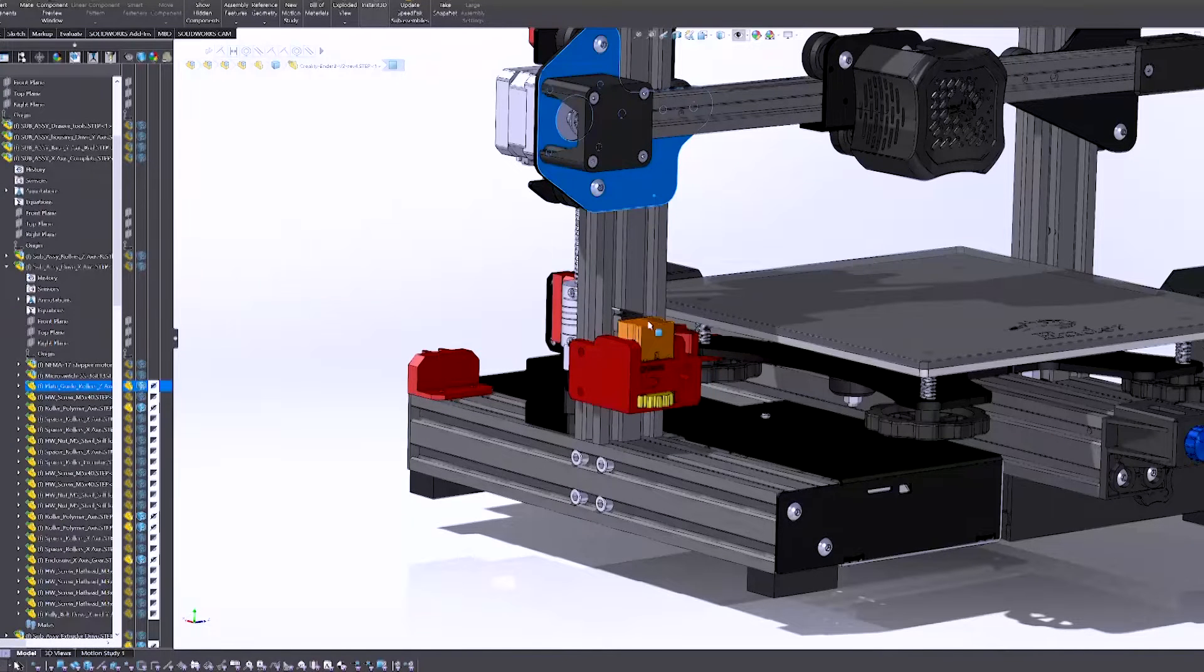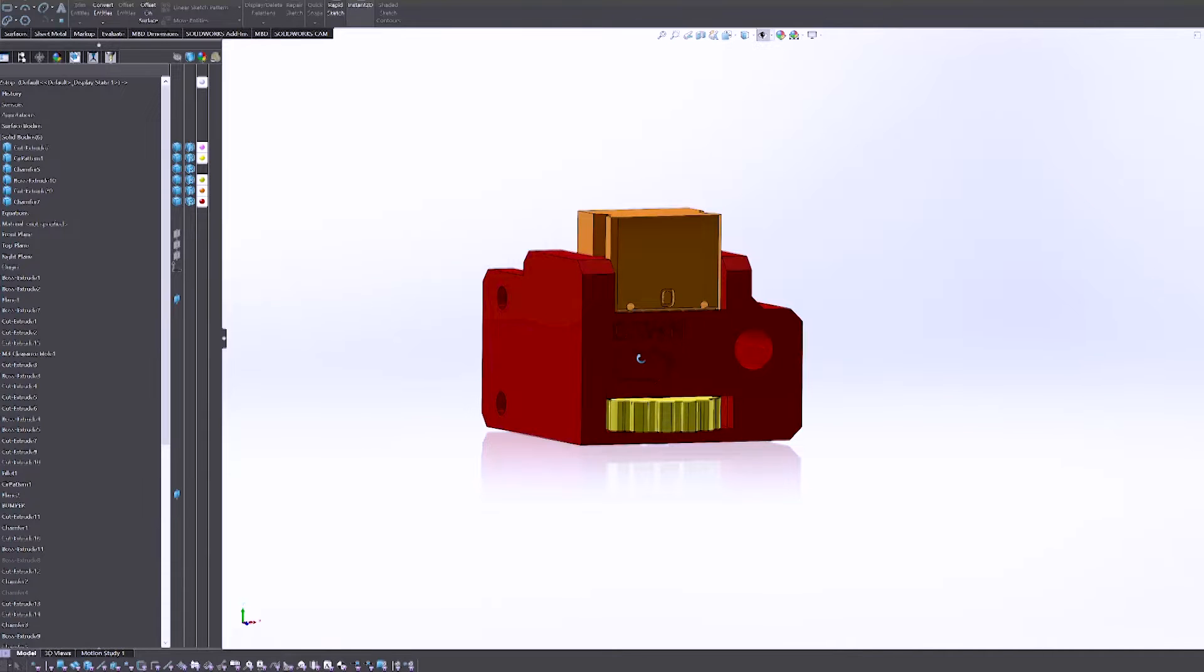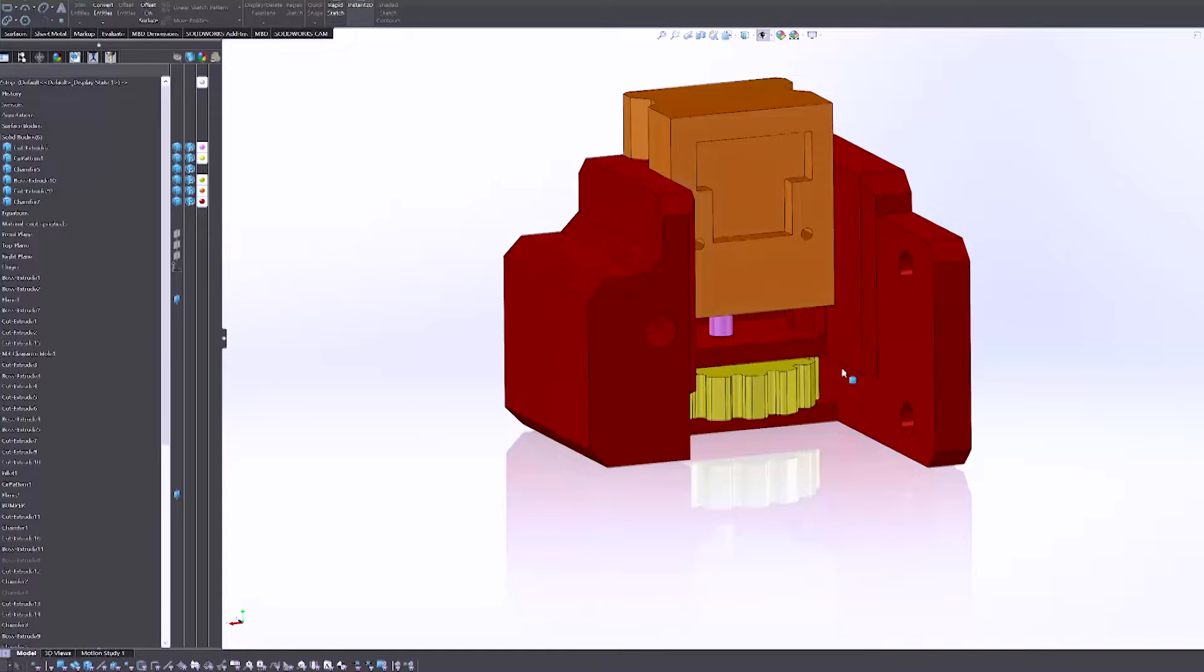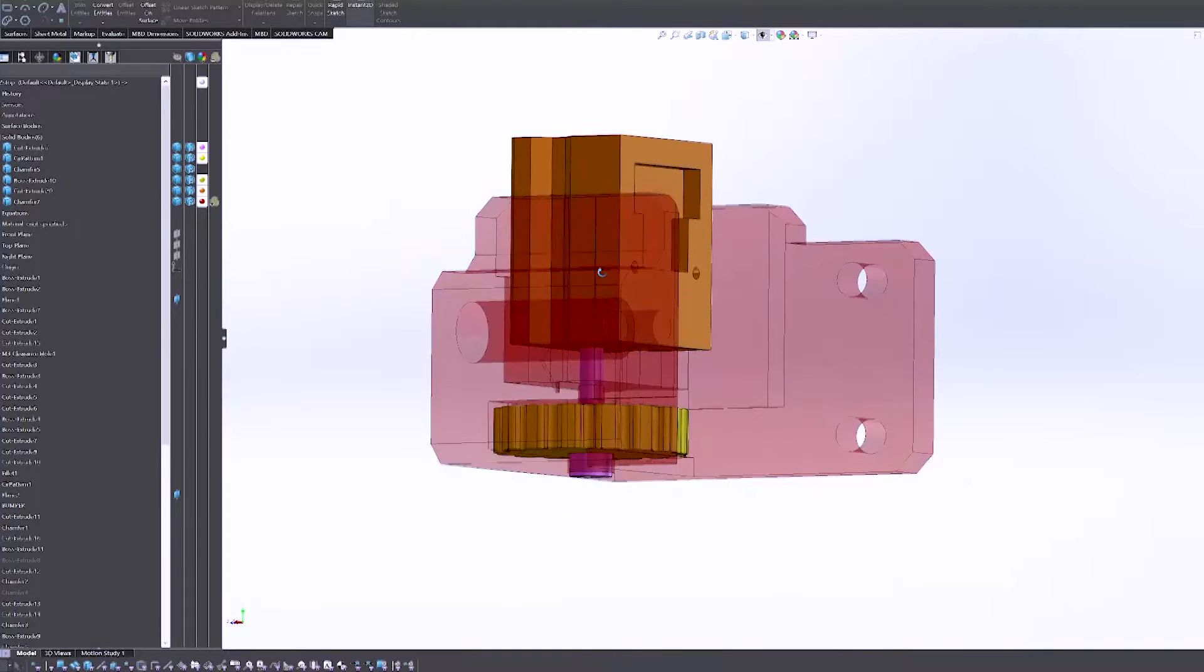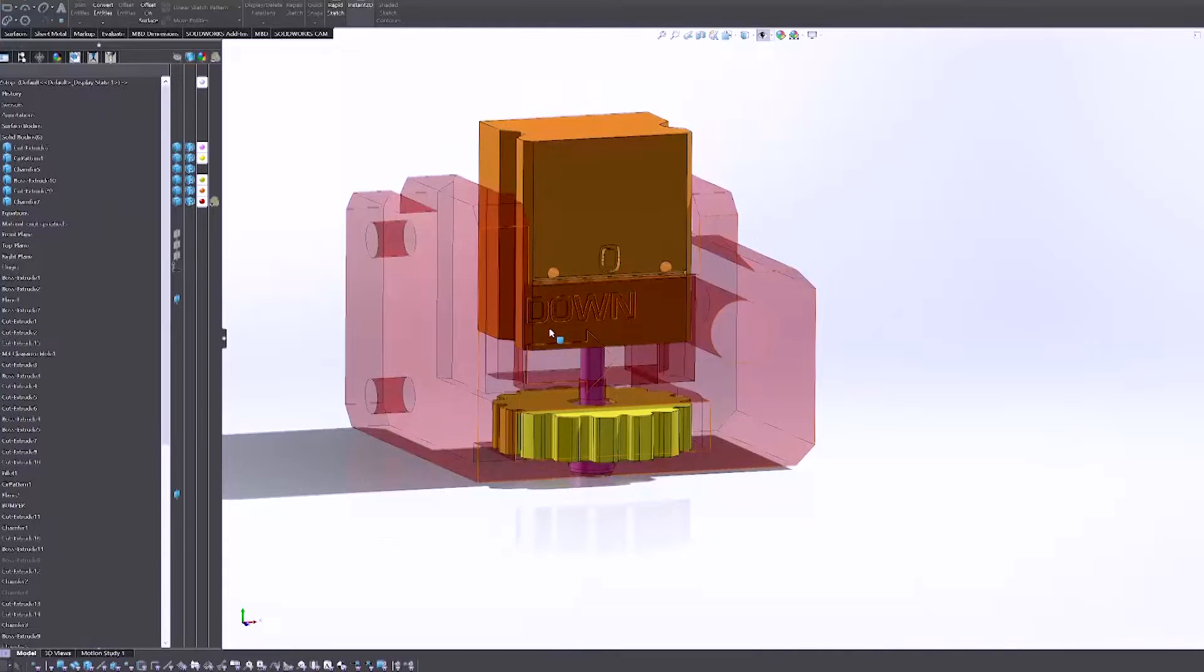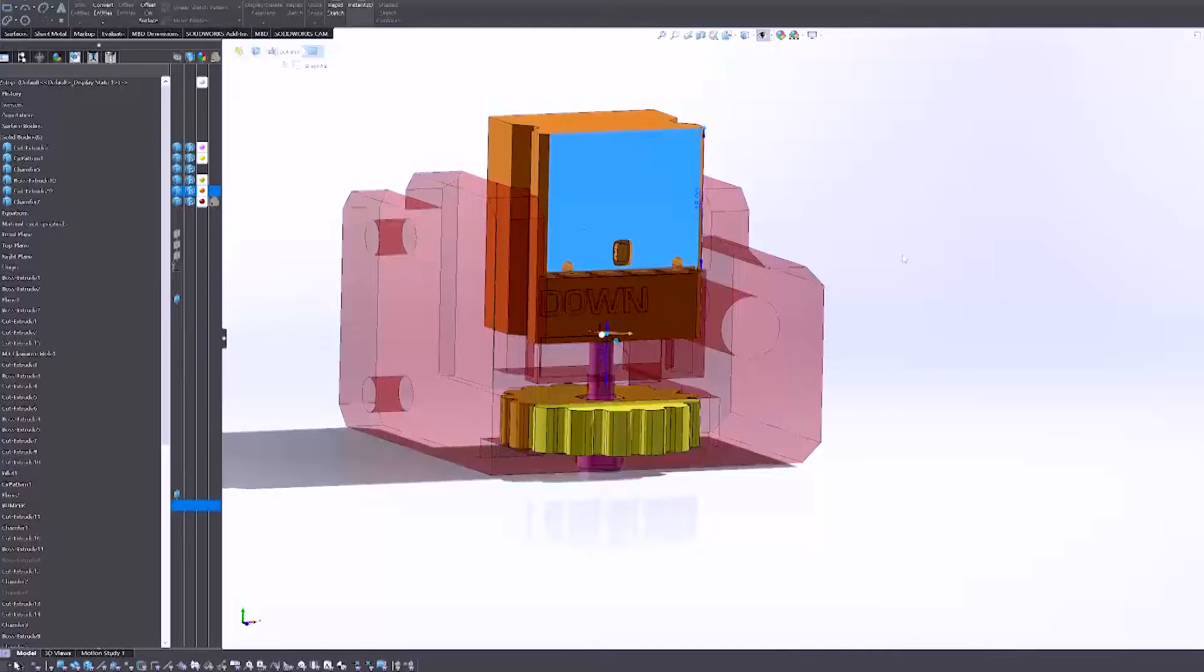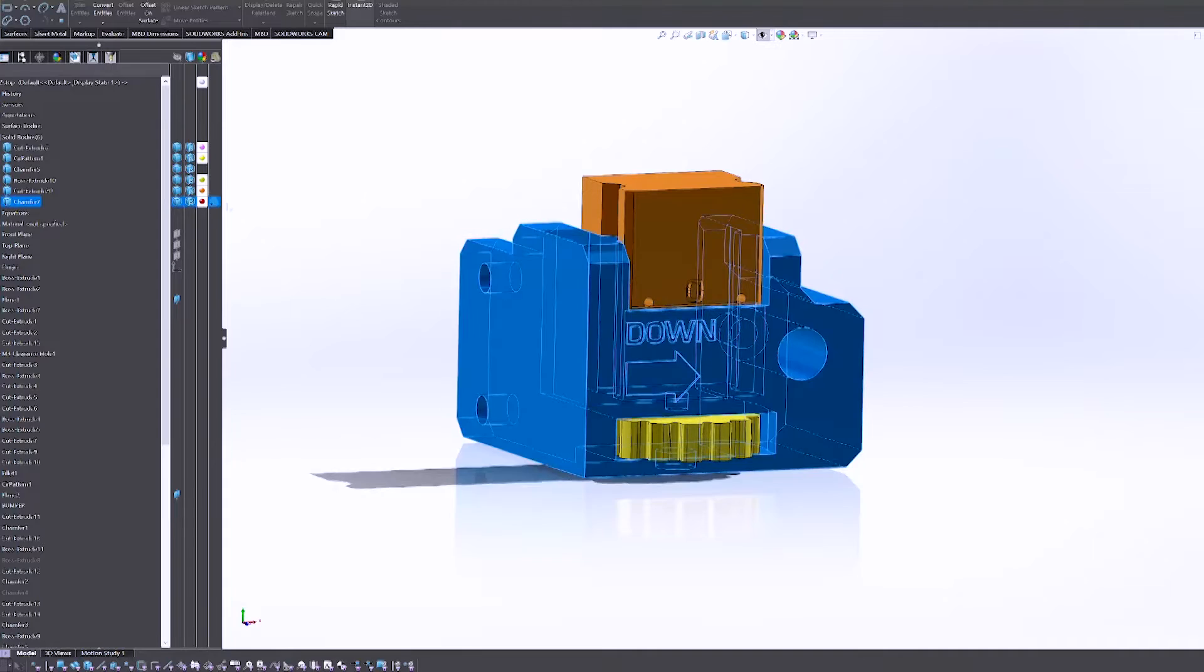The mount that comes with the Ender 3 for the Z limit switch would normally have to be loosened off with socket head cap screws on the side of the extrusion to make adjustments. You're doing it by hand, so you'll loosen it too much and it'll move around a bunch without precise control. In this assembly, the thumb screw controls an M3 socket head cap screw which has a 0.5 millimeter pitch, giving you very fine control over the bumper and limit switch position.